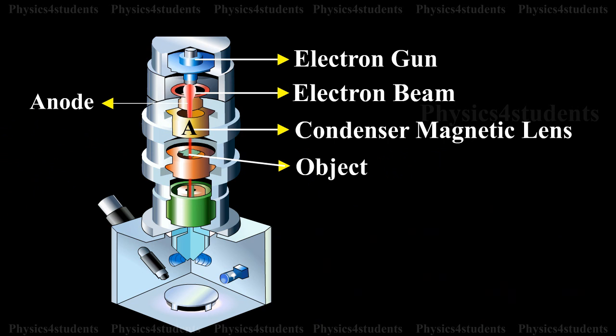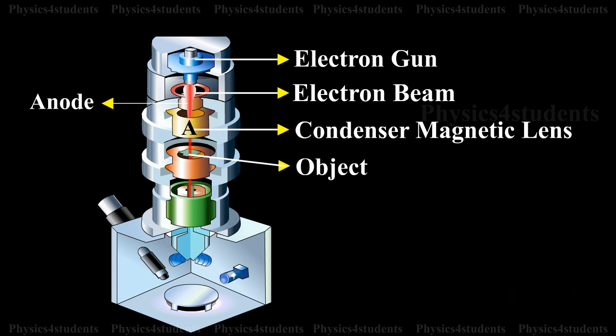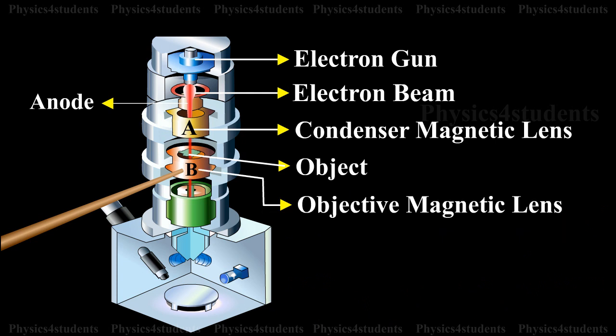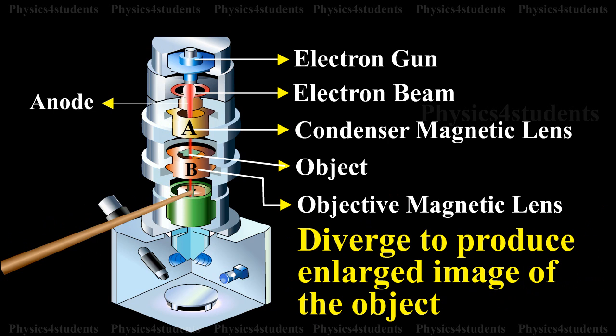The transmitted beam will thus have the lightness of the objects traversed by it. The second electromagnet B, i.e., objective magnetic lens causes the electron beam to diverge to produce enlarged image of the object.